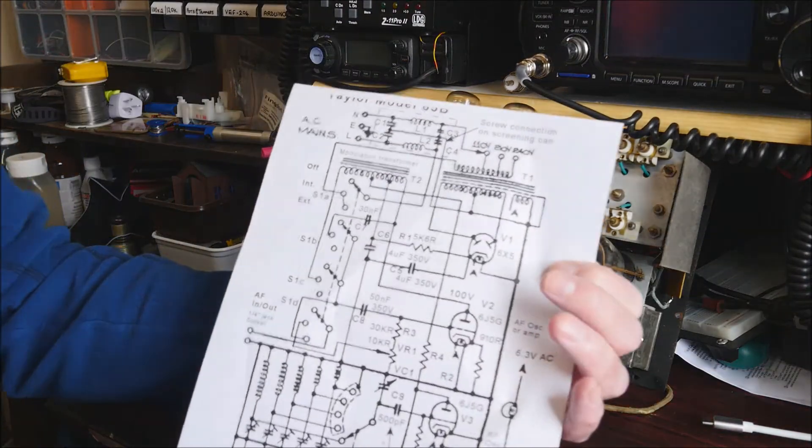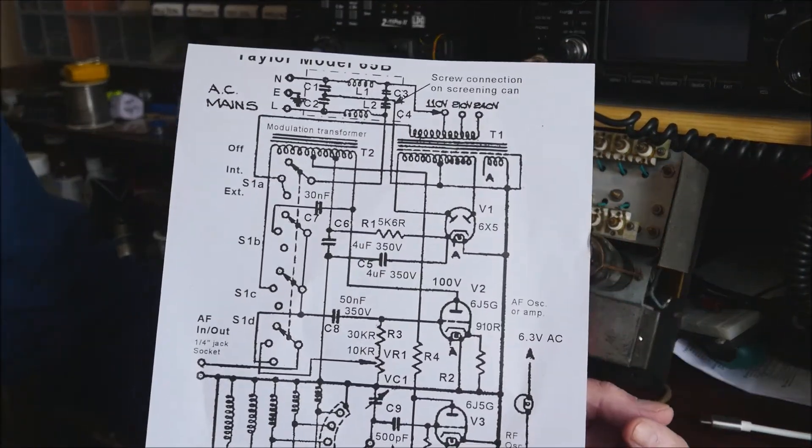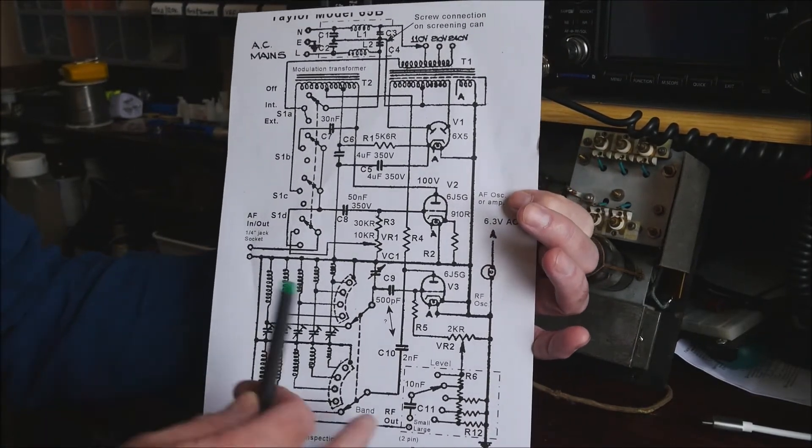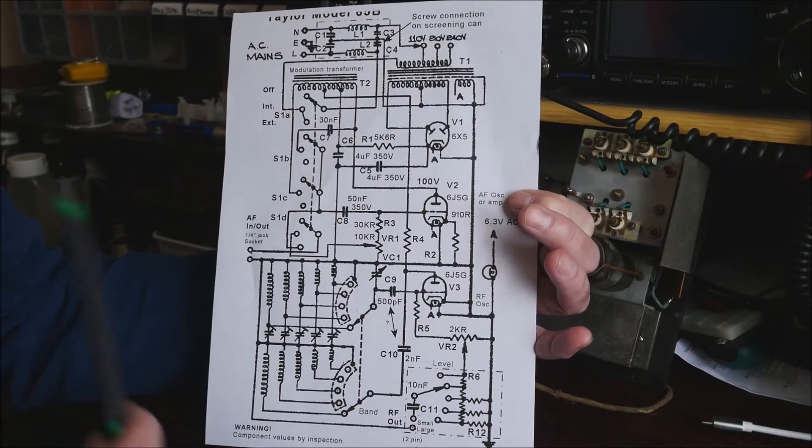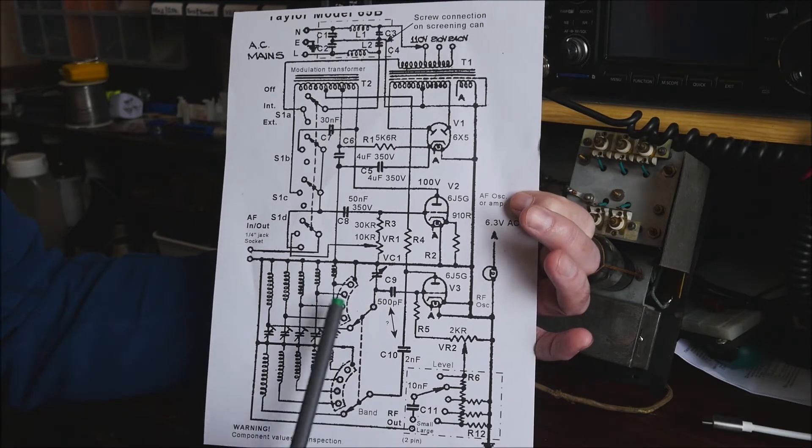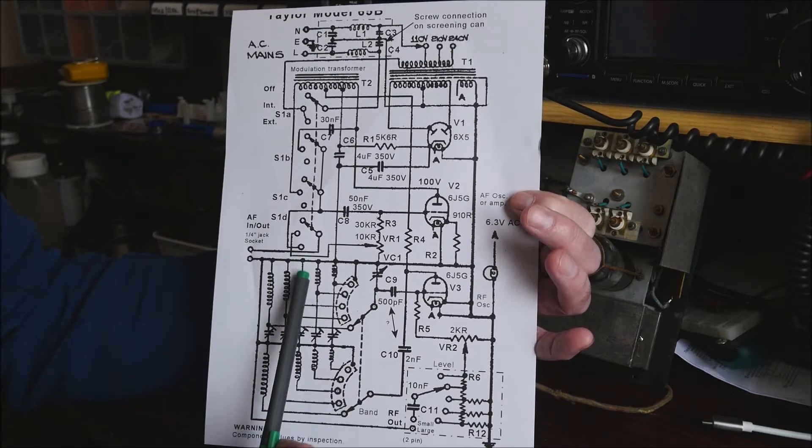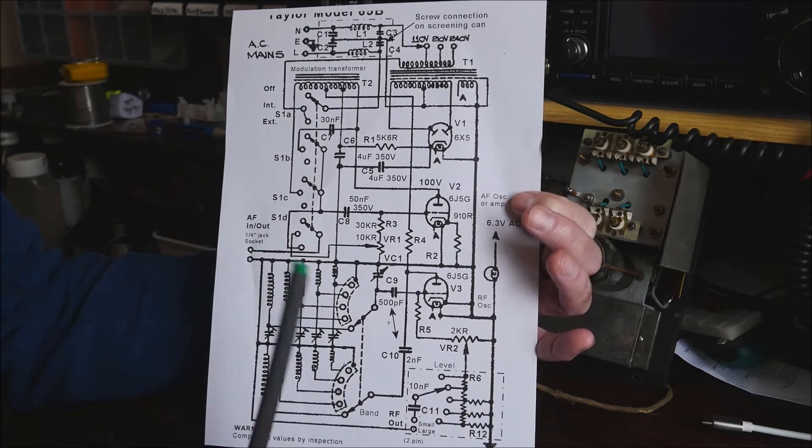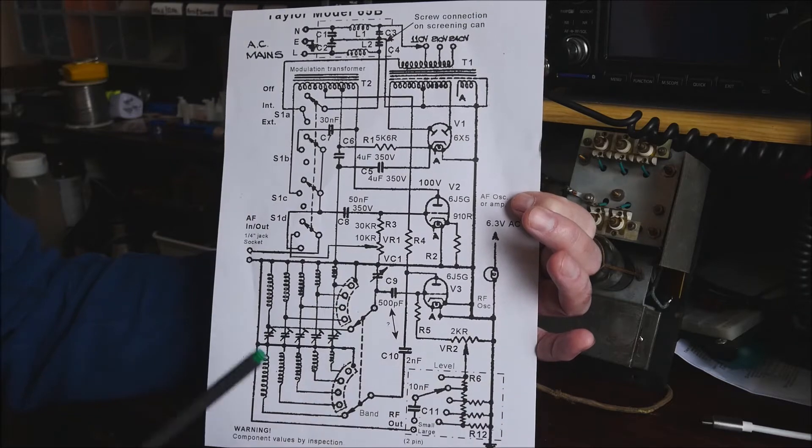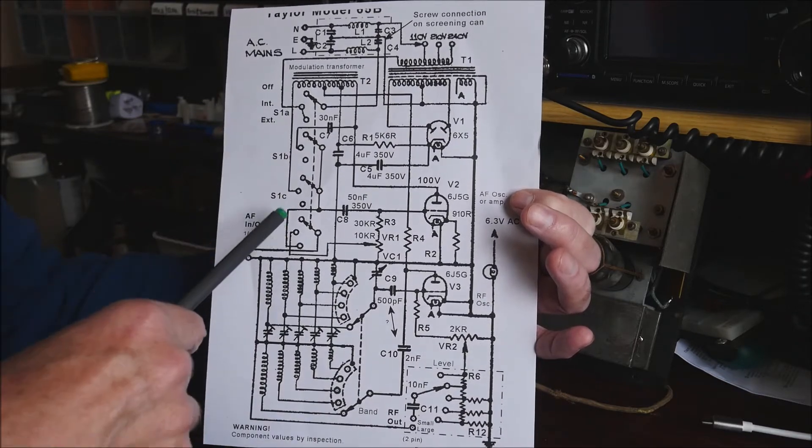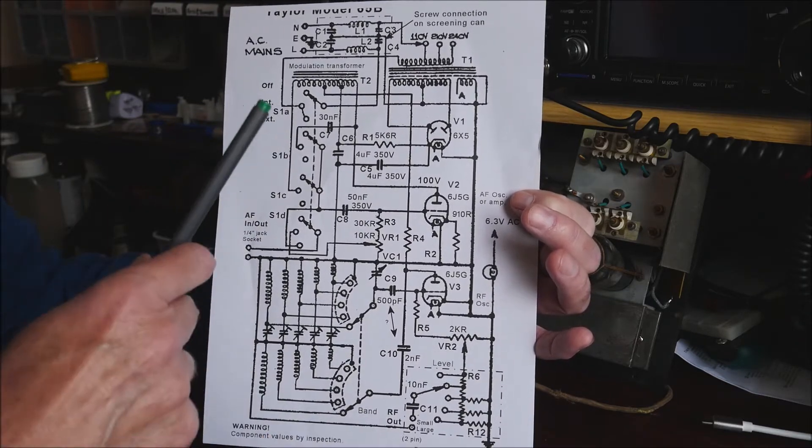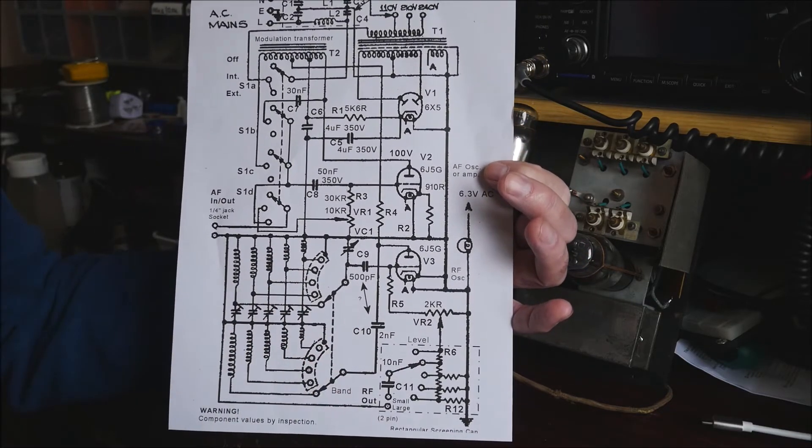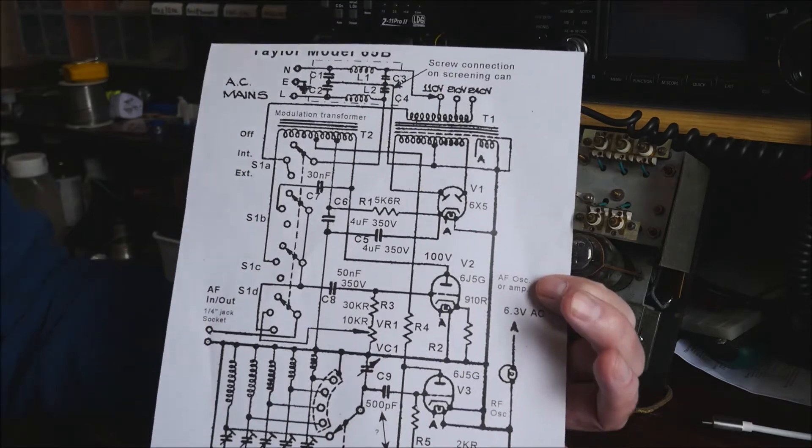Okay, welcome back. Here's the circuit diagram for the Taylor model 65B. And I think the first thing to say is actually it's a relatively simple circuit. I have to bear in mind that although there appears to be a lot of complexity here, in reality only one set of coils and capacitor is used at any one time depending on the position of this switch. And one or two other bits get switched in and out as well, notably here and also down here at the output attenuator.